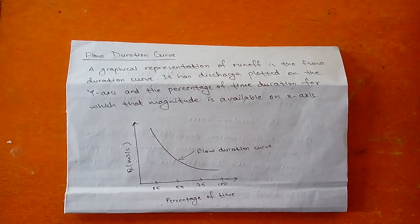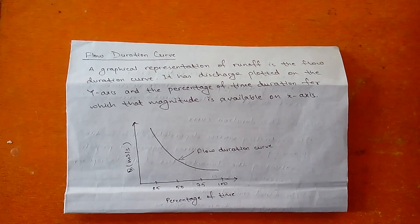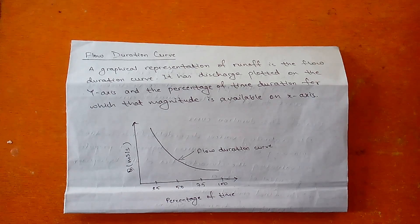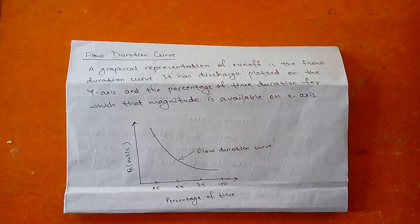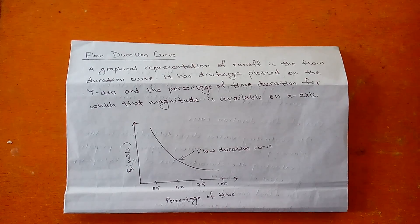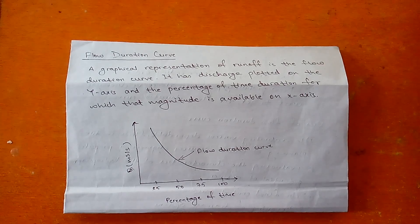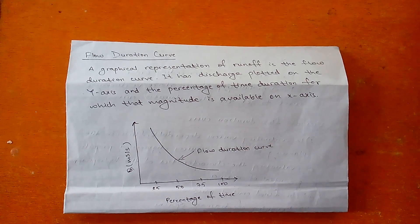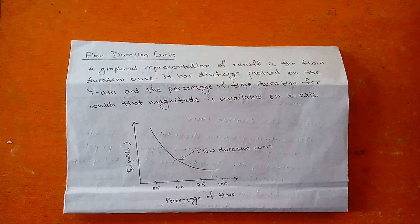Hello and welcome to Civil Talks. Today we're going to learn about the flow duration curve. A flow duration curve is a graphical representation of runoff. It is plotted by taking discharge on the y-axis and probability percentage of time on the x-axis. Here you can see the picture of the flow duration curve graph.